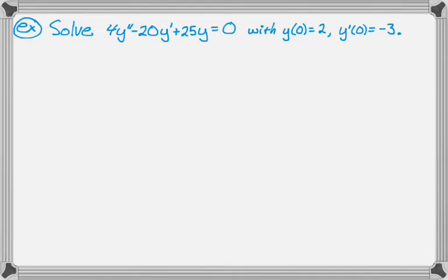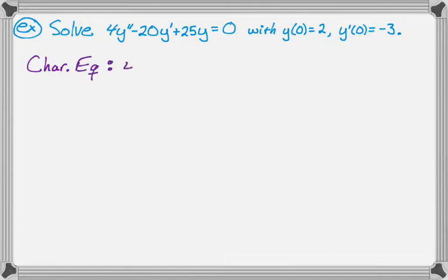We want to solve 4y double prime minus 20y prime plus 25y equals zero, where we also know that y of zero is two and y prime of zero is negative three. This is an initial value problem because both of those pieces of information are at x equals zero. It's second order with constant coefficients, so we're going to get the characteristic equation. The characteristic equation is a quadratic: 4r squared minus 20r plus 25. We need to solve this to see what the roots look like, so that we know what the general solution looks like.